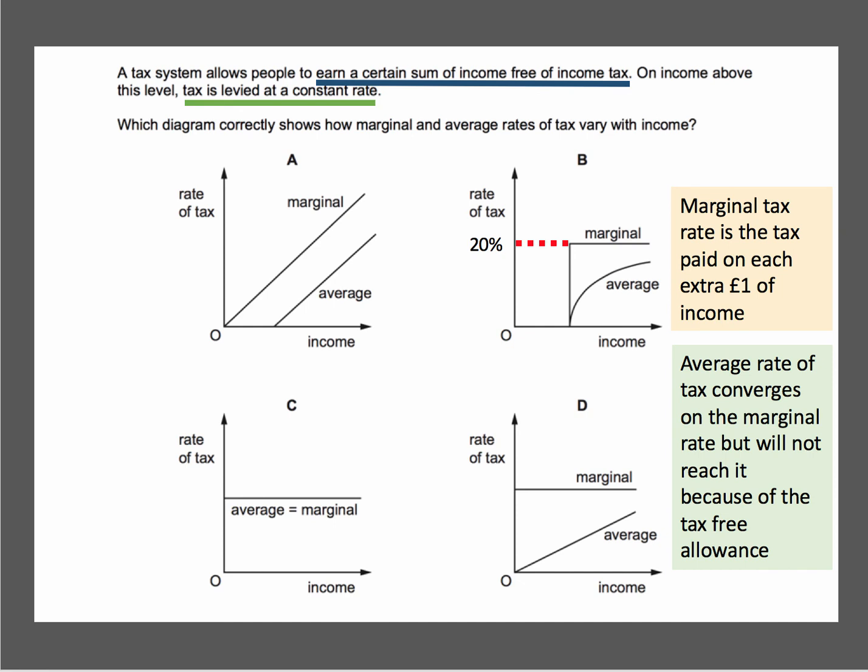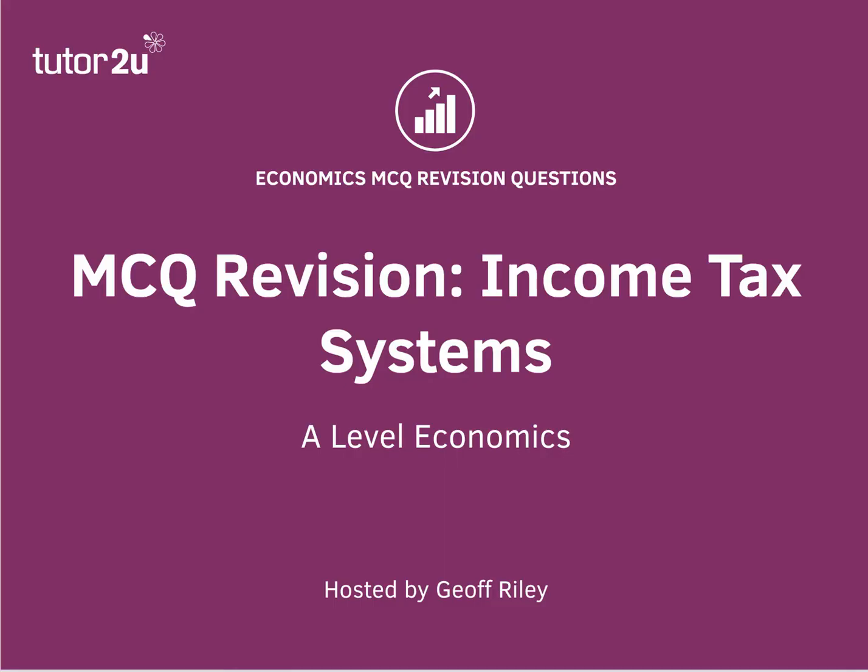This is an interesting question which asks you to think about tax allowances and the difference between the marginal and average rate of tax. B is the right answer — it gives us an idea of a progressive income tax system, as the average rate of tax goes up with income. I hope you got that right.